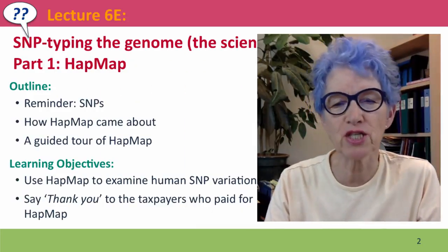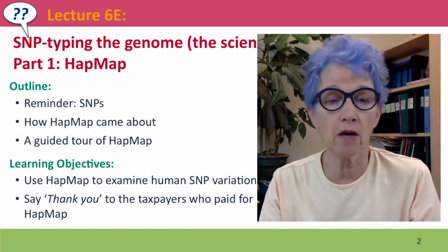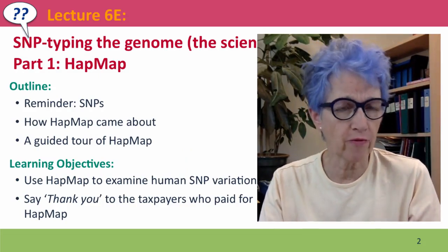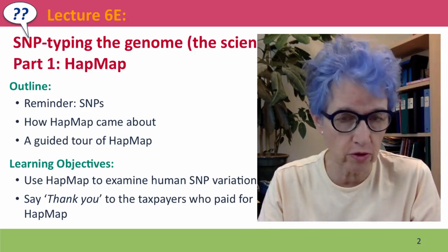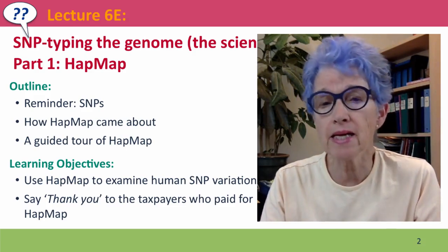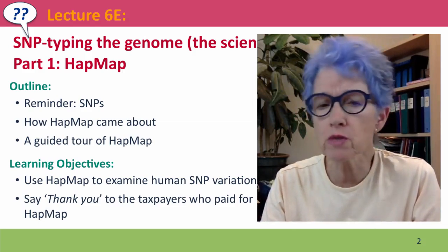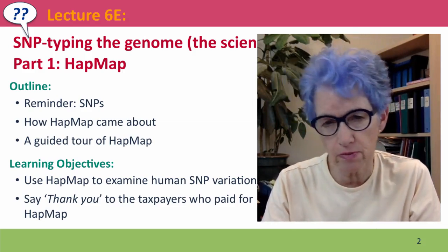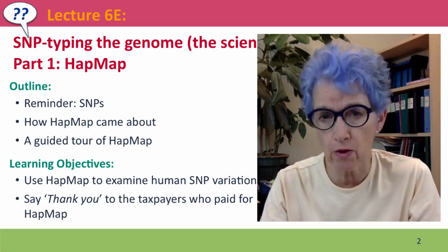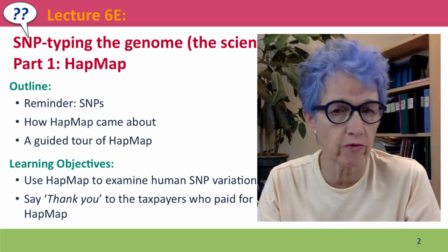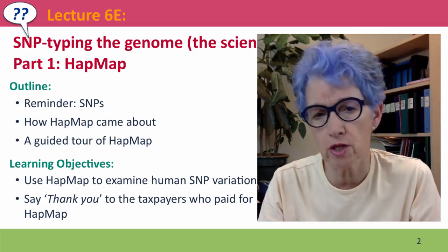Hi everyone. Welcome to Lecture 6E of Useful Genetics. This is the first of a couple of lectures about the phenomenon of being able to type the human genome for the presence of SNPs, markers of genetic difference. In this lecture, we're going to introduce the resource called HapMap. First, we'll do a little reminder about what SNPs are, what they mean. Then we'll talk about how HapMap came about briefly, and then I'll give you a guided tour of HapMap showing how we can use it to understand human genetic diversity.